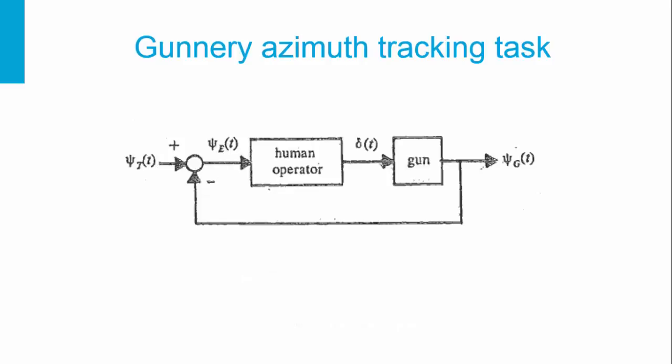The control problem of the gunnery looks like this: we have the desired value CT, the human operator who is going to achieve that, and the gun which is the plant to be controlled. The output is the azimuth tracking value of the gun. The human operator is always correcting the error, which is the difference between the azimuth of the gun and the azimuth of the target. Using only the error is the so-called compensatory behaviour.